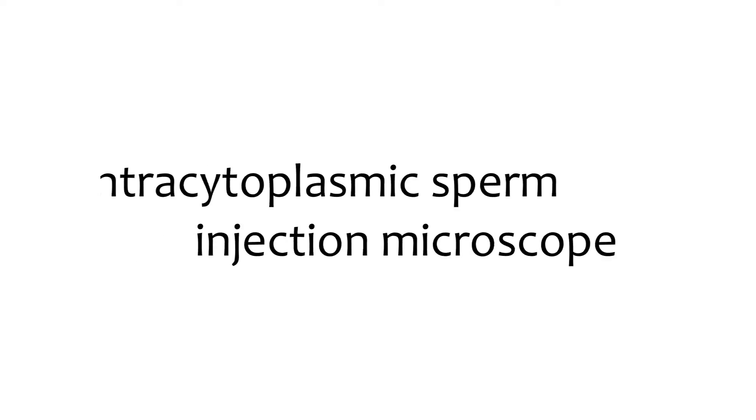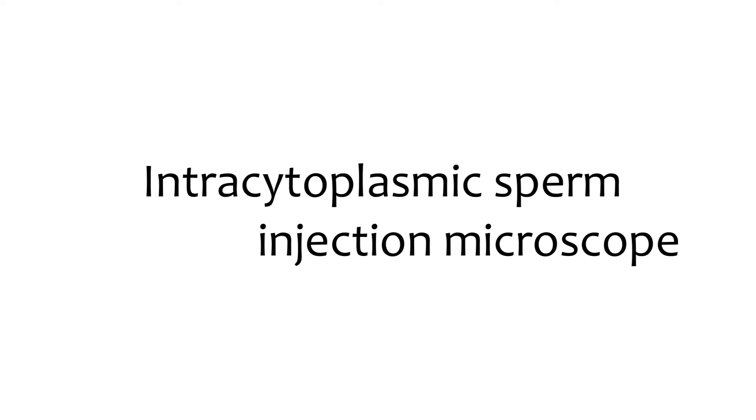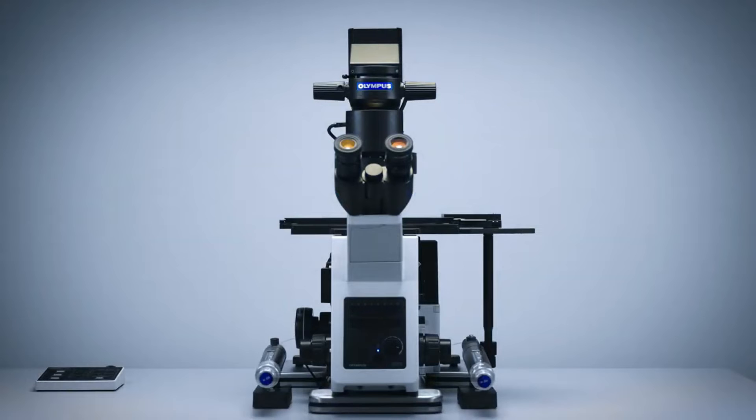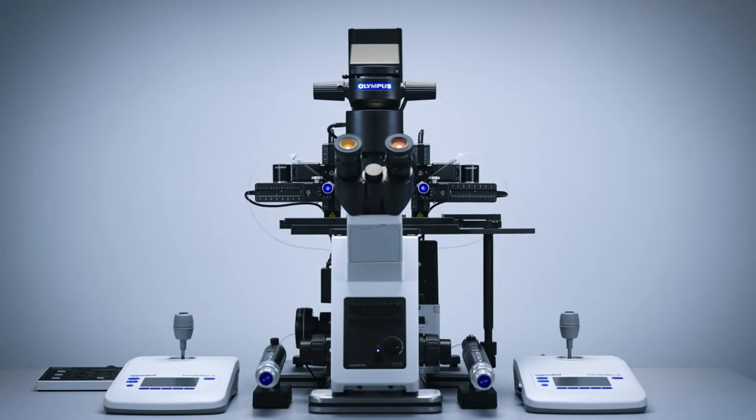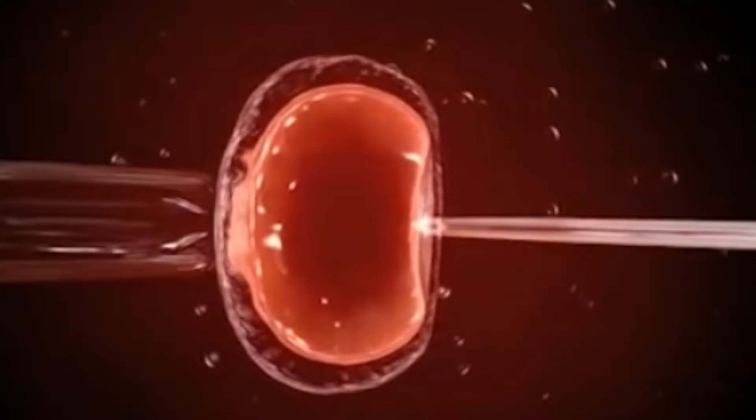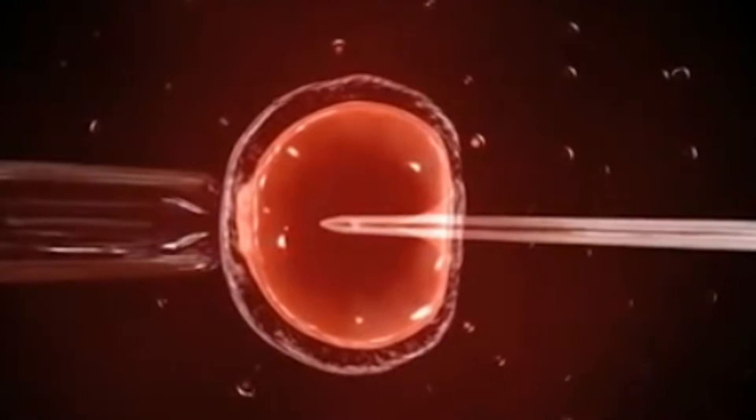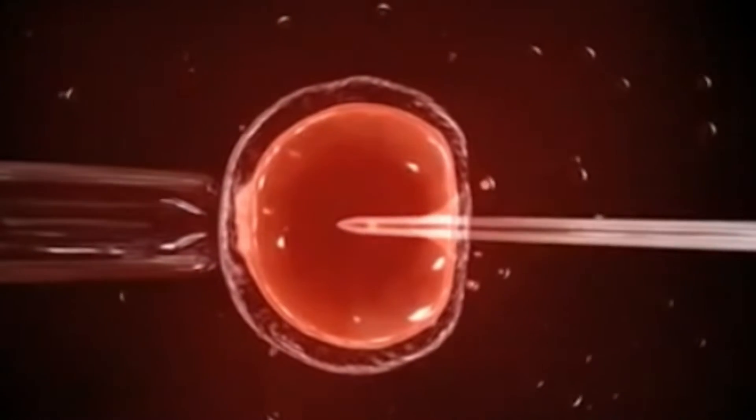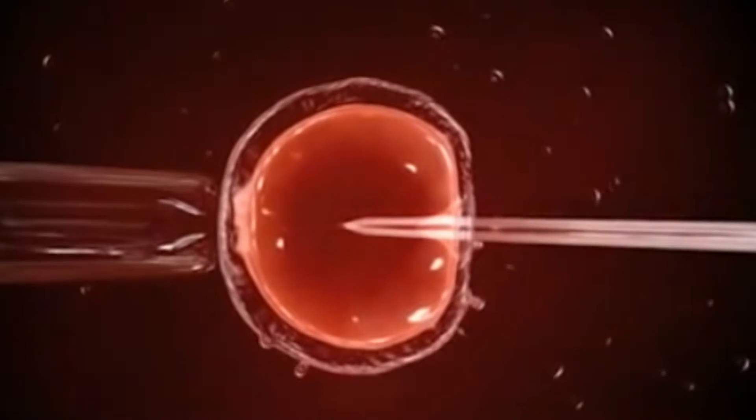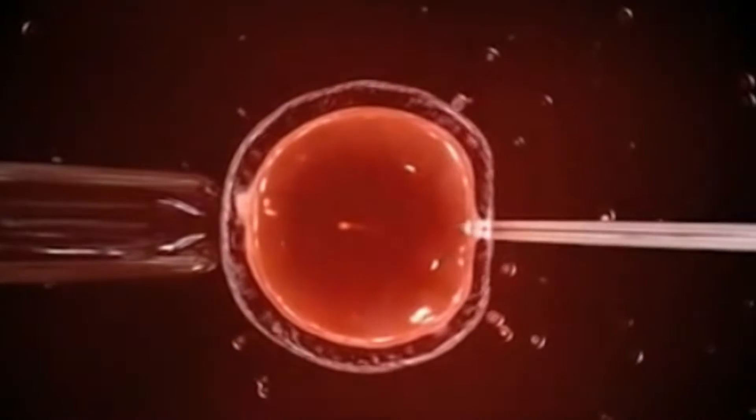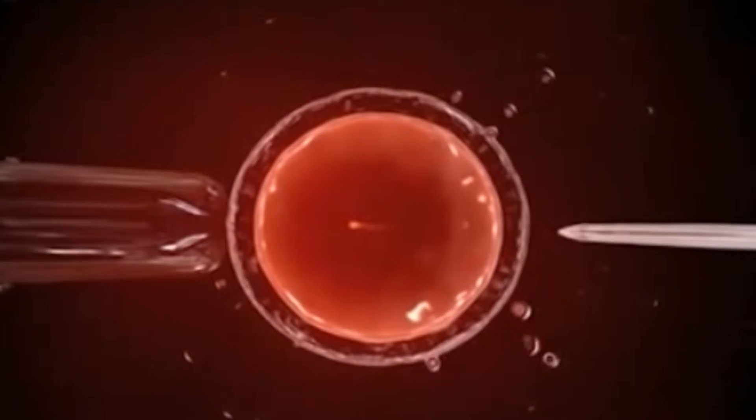So what is intracytoplasmic sperm injection microscope? Intracytoplasmic sperm injection, or ICSI, is an in vitro fertilization technique in which a single sperm is injected into the oocyte cytoplasm using a pipette. Our inverted microscope system helps improve the quality of ICSI, which requires both speed and precision.